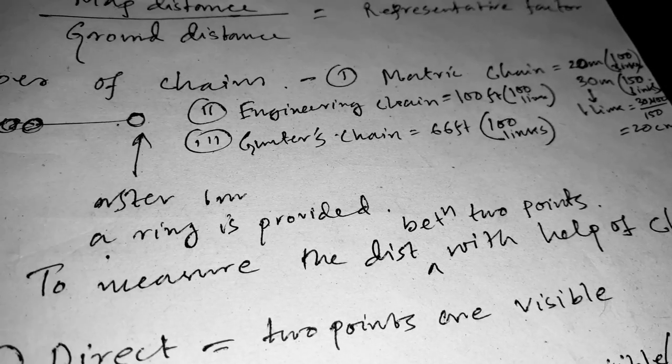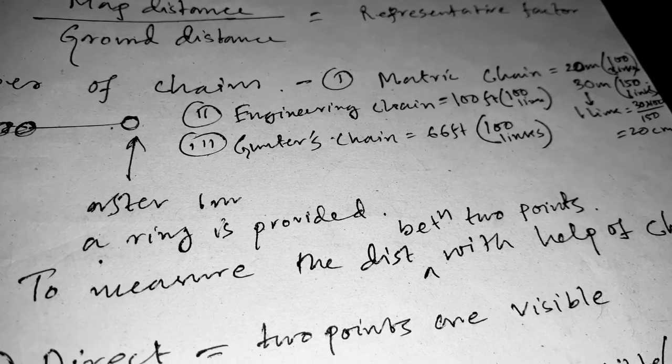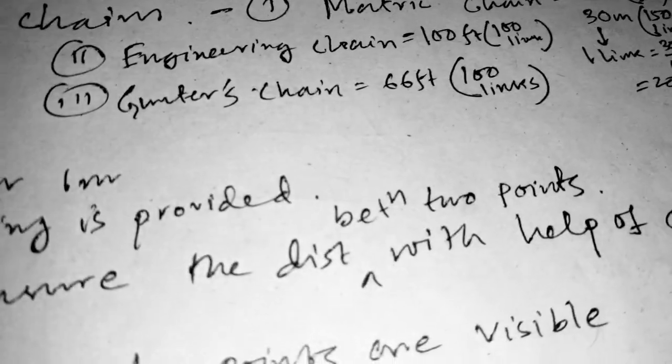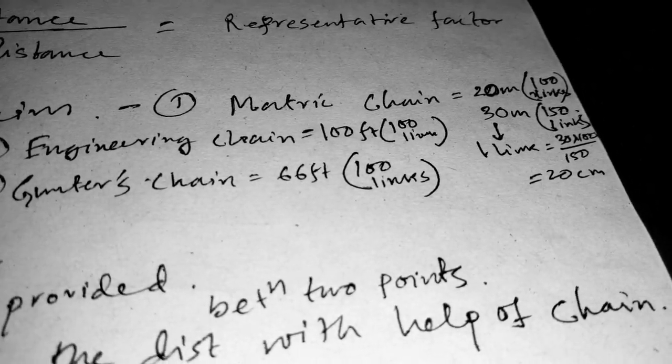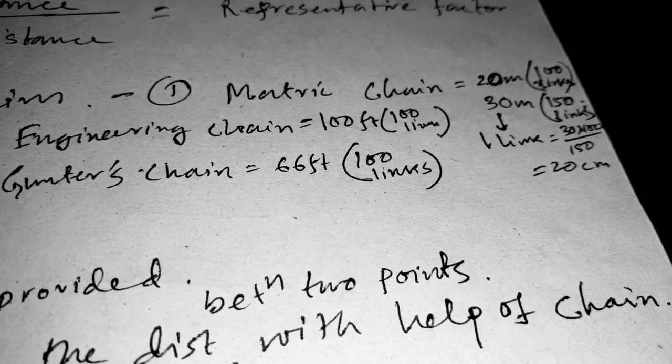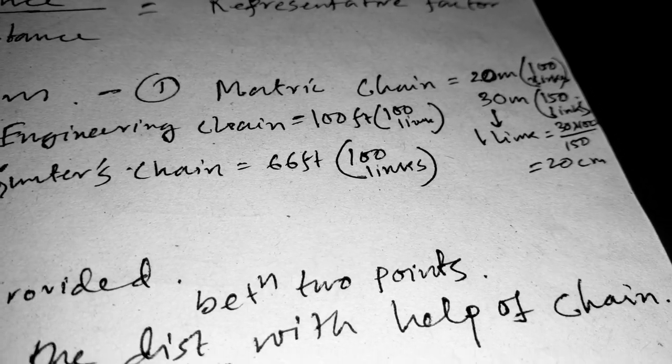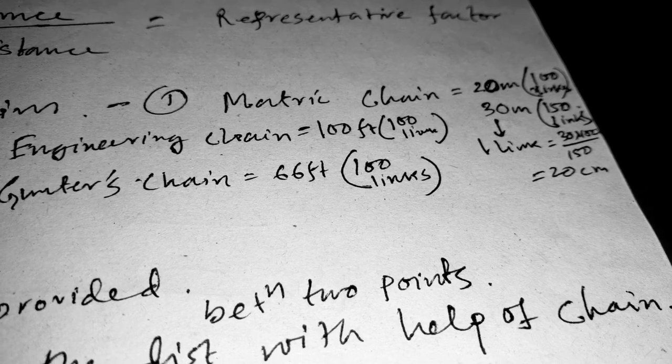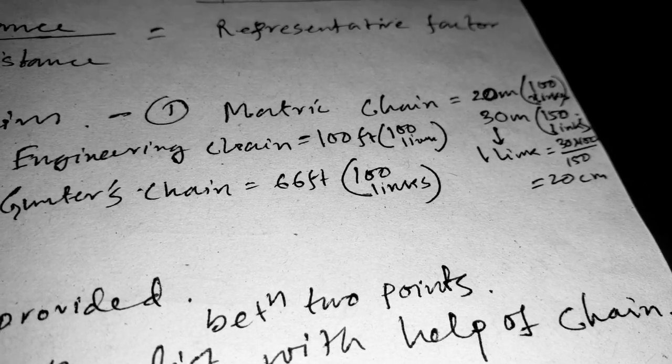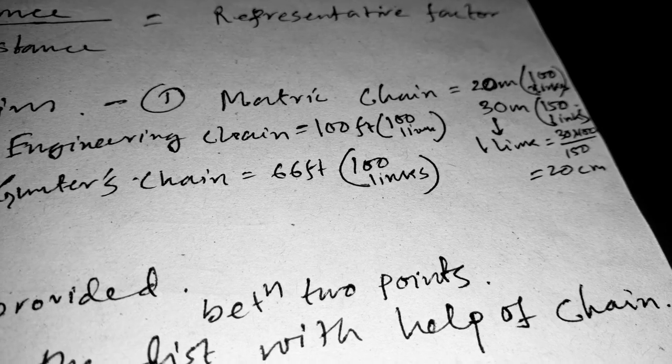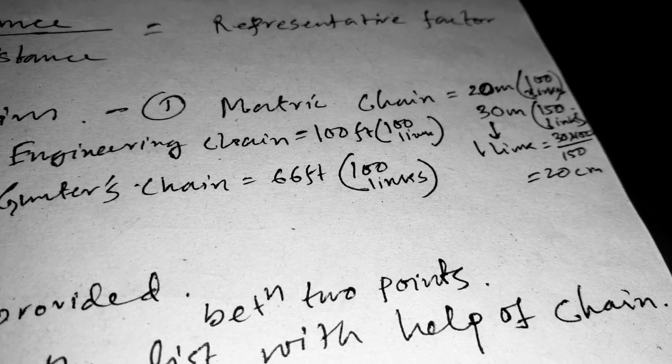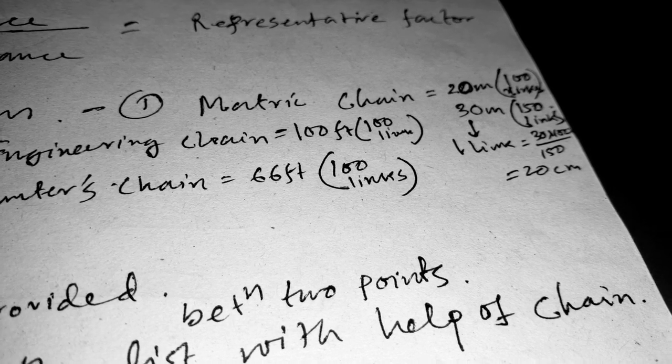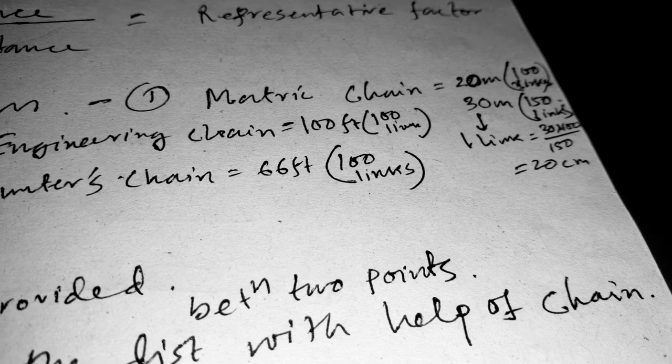Now what is the distance between one link to another link? We can easily calculate it. For metric chain, there are two types: 20 meter and another is 30 meter length. In 20 meter, 100 links are provided, and in 30 meter, 150 links are provided. Now one link equals to 30 into 100 divided by 150 links, that is 20 centimeter.